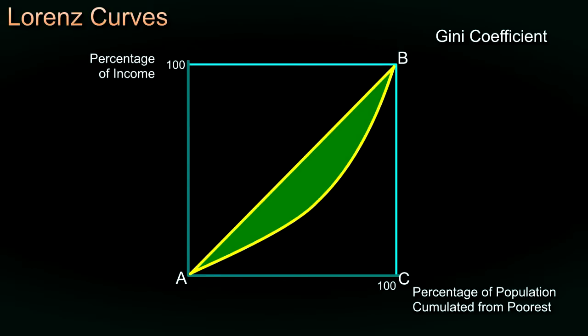We'll be using a formula that will enable us to measure this area to find the value. This will be useful because it enables us to compare income distributions in different societies and see how the distribution of income is changing within a society over time. You need to be very clear about what the information is actually conveying. One thing to look out for: does the data refer to income distribution before taxes and Social Security payments or after? Higher income groups tend to pay a higher proportion of their income in taxation, while lower income groups receive more in Social Security payments. So if we take the figures after deduction of tax and adding in Social Security payments, the distribution of income looks less uneven.